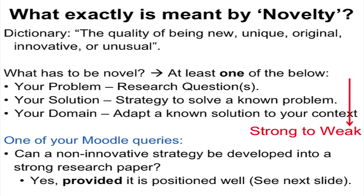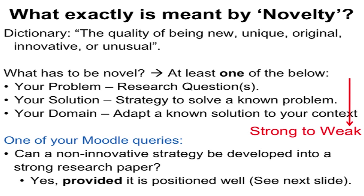One option is that your problem is new — you are asking an entirely new research question. For example, a new technology has been invented and you are the first to carry out a study on its effectiveness in the classroom. Some cutting-edge research falls in this category. The next category is novelty in your solution — the problem may be known, but your solution strategy is novel and you are solving it in a different way from prior work. In the third case, your domain could be new — both the problem and the solution are known and have been tried in some other domain, and you are adapting that solution to your own context.